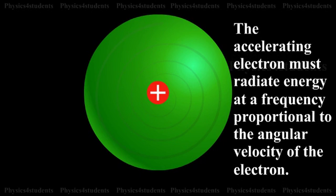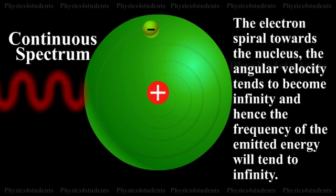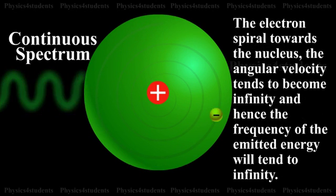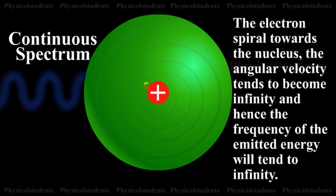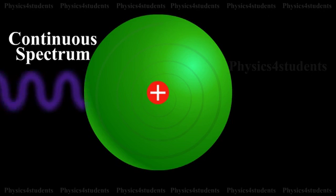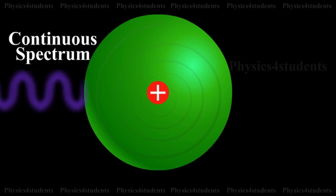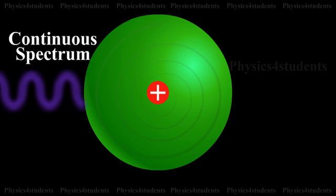The accelerating electron must radiate energy at a frequency proportional to the angular velocity of the electron. Therefore, as the electron spirals towards the nucleus, the angular velocity tends to become infinity and hence the frequency of the emitted energy will tend to infinity. This will result in a continuous spectrum with all possible wavelengths. But experiments reveal only line spectra of fixed wavelength from atoms.